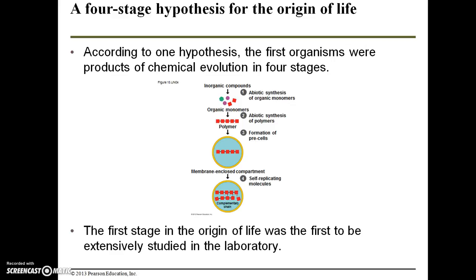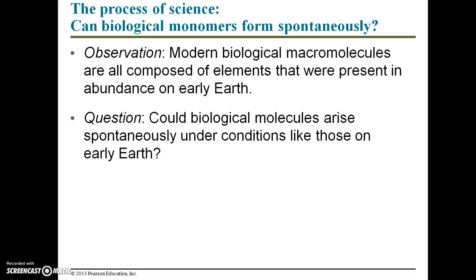One of the best hypotheses proposed for the origin of life on earth is this four-stage hypothesis. According to this hypothesis, the first organisms were products of chemical evolution in four stages. The first stage — which was the first to be extensively studied in the laboratory — is the abiotic synthesis of organic monomers: taking inorganic ingredients and making organic monomers from those ingredients.